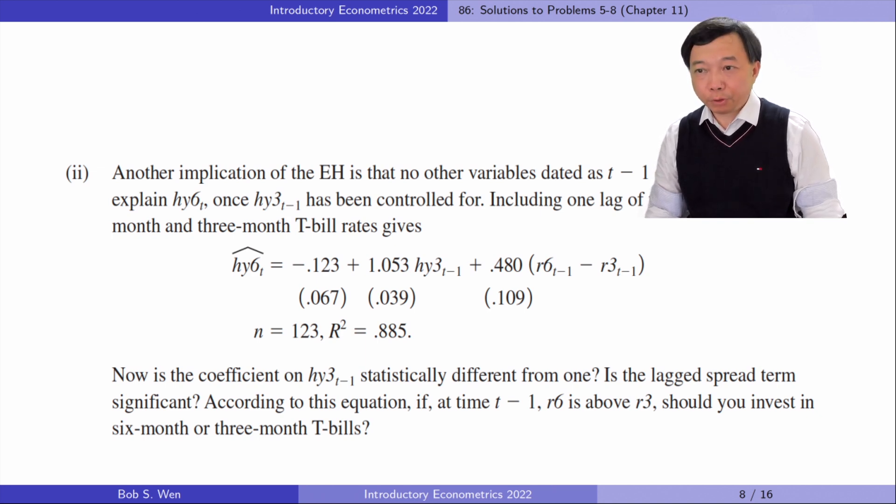Now is the coefficient on hy3_{t-1} statistically different from 1? Is the lag spread term statistically significant? According to this equation, if at time t-1, r6 is above r3, should you invest in 6-month or 3-month t-bills?